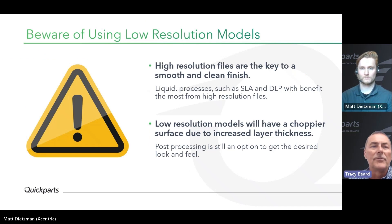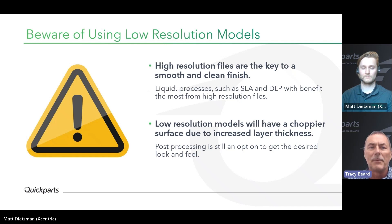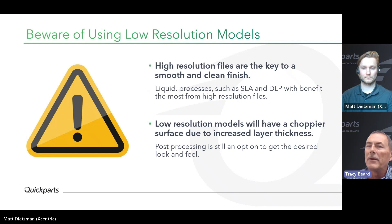Beware of low-resolution models. It's important to start with the highest resolution file you can — it gives you better success with smooth, clean, finished parts. High-precision processes such as SLS, SLA, and DLP benefit the most from high-resolution files because of the increased level of detail they can achieve. Low-resolution models tend to have a choppier, faceted surface. While they can be printed successfully, they often require additional finish work, leading to increased lead times and costs. Starting with a high-resolution file is especially critical for highly detailed or clear transparent parts.